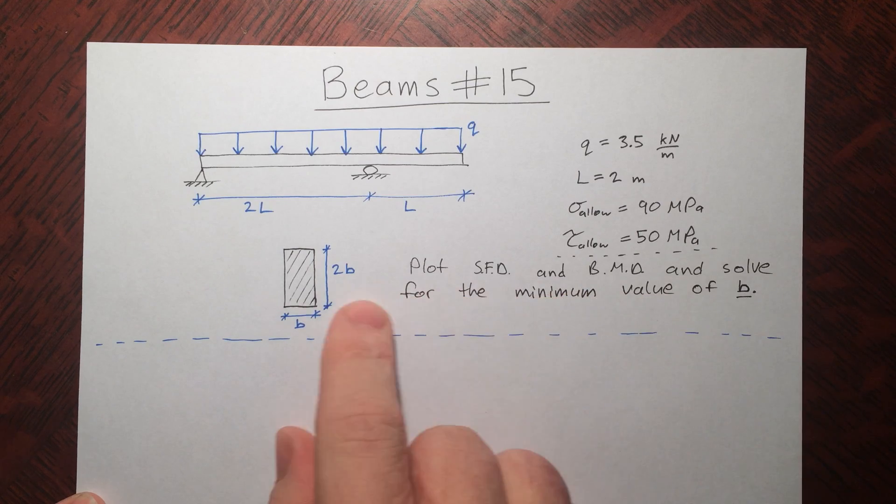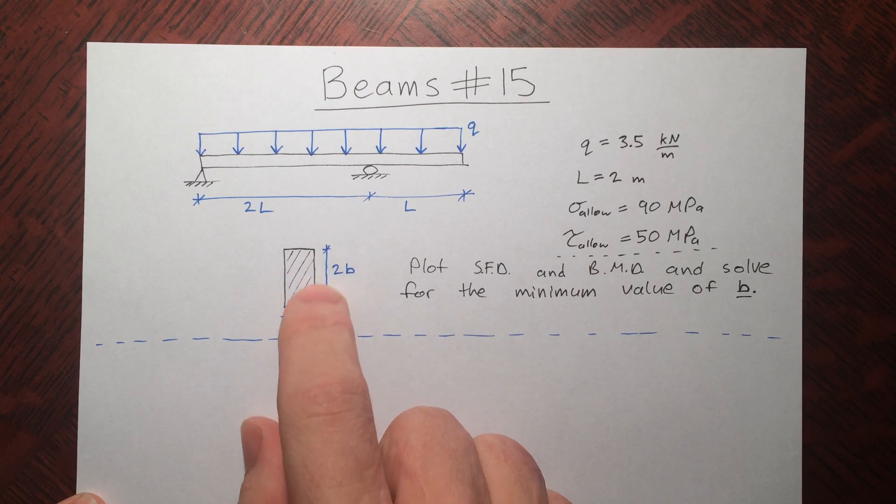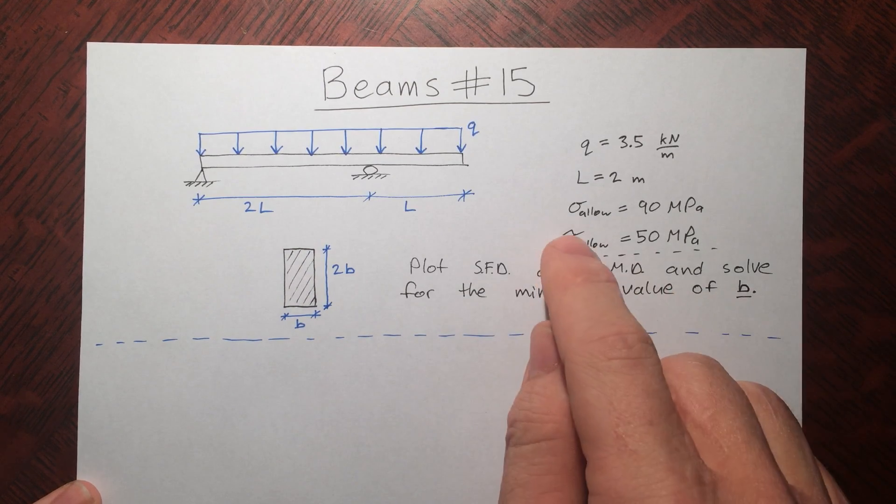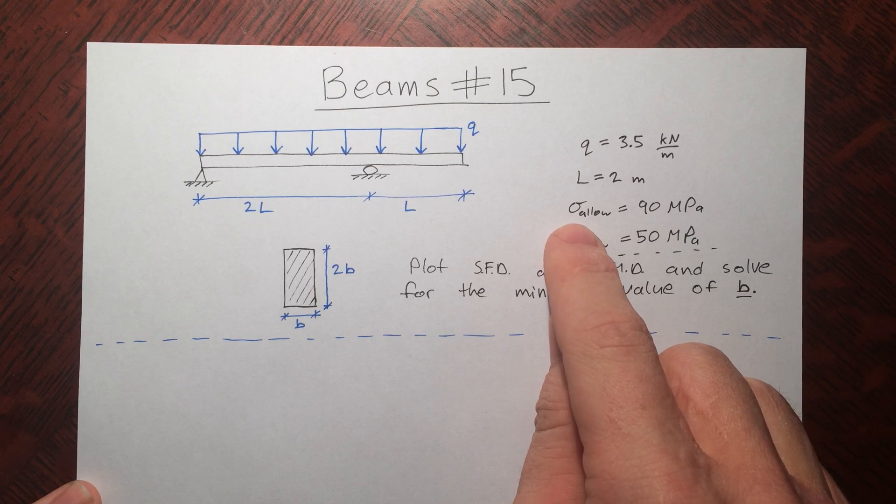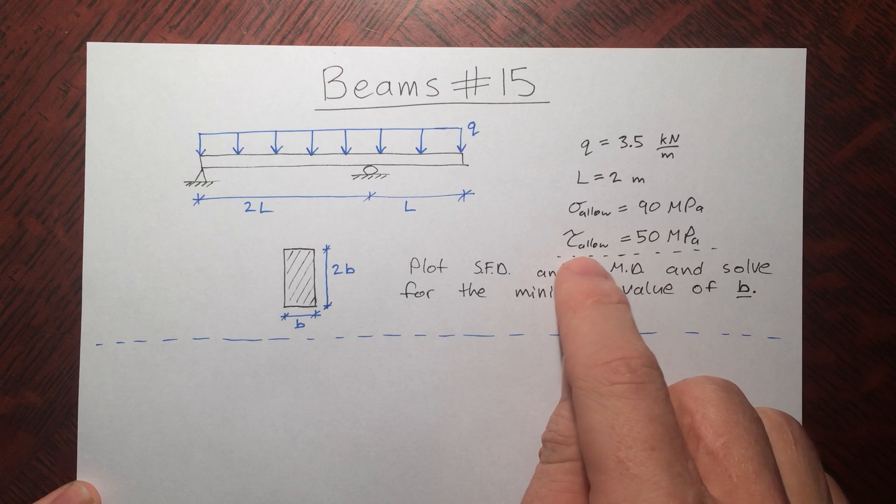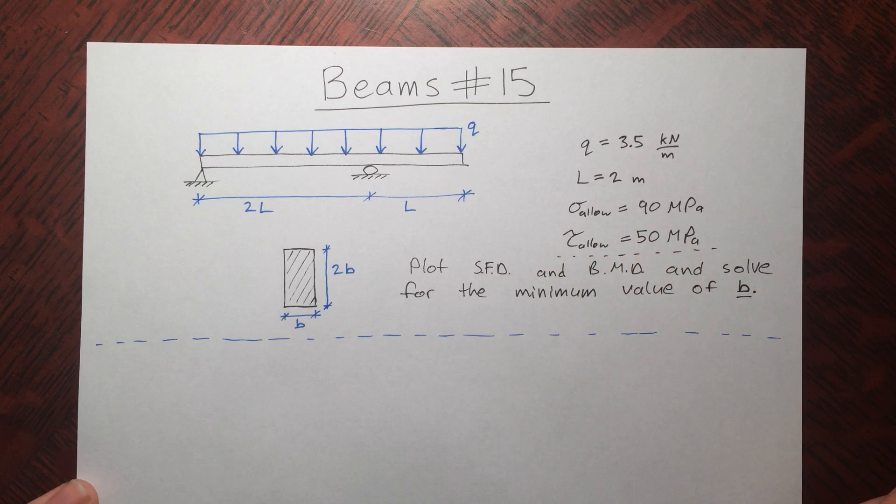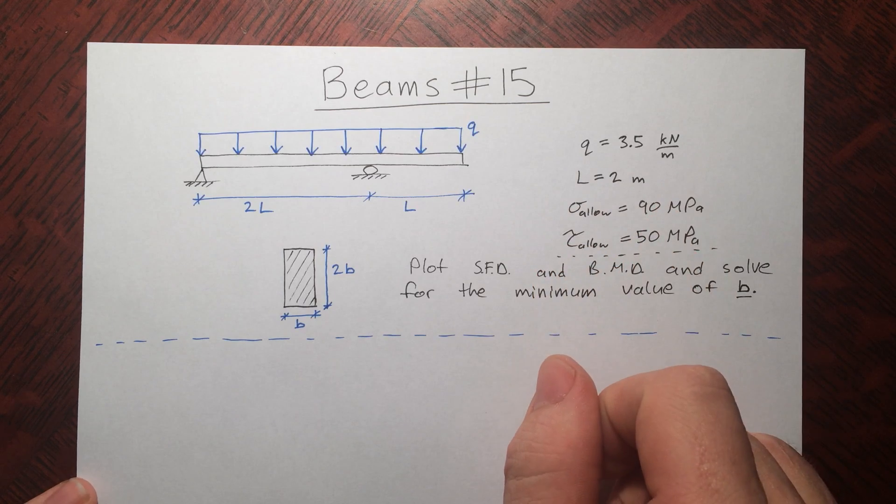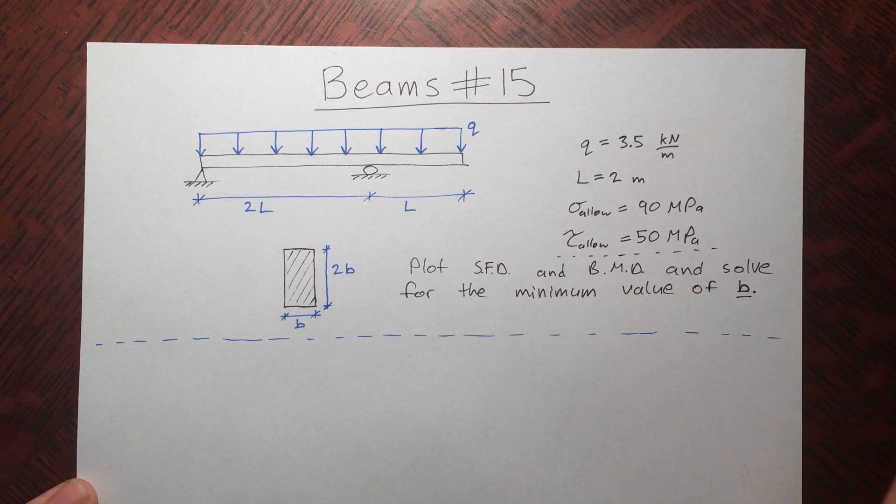Now I'm going to solve for the smallest value that B can be, given that this is our cross-section here. So there's going to be two cases we're going to need to check for B. The first case is when the beam fails in bending at 90 MPa, and the second case is when the beam fails in shear at 50 MPa. So we're going to have to solve two equations, find two values of B, and then pick the one that we need.